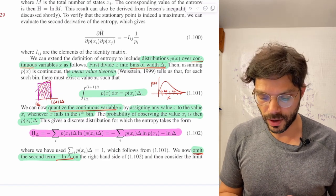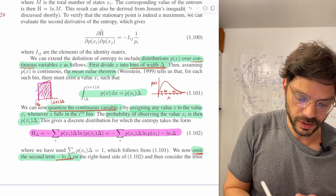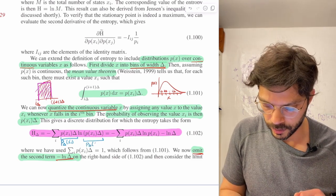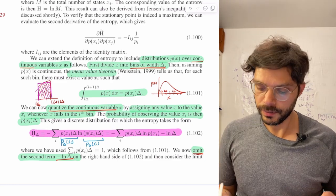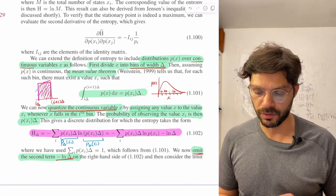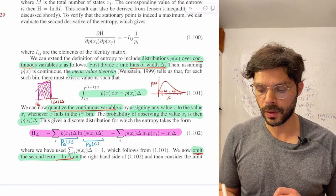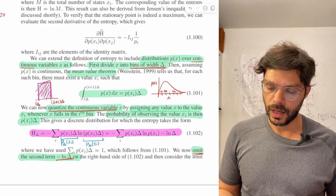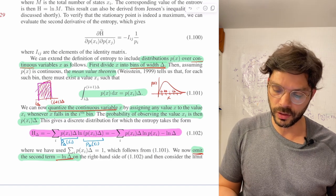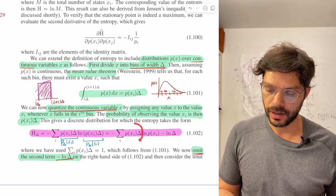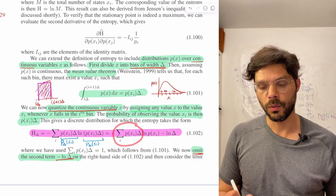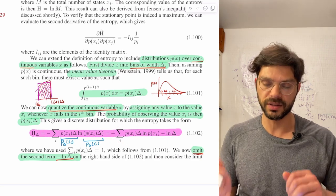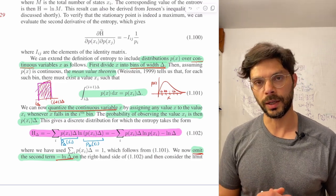Notice we've got a subscript delta. We expand ln of p_delta, and one of the terms is just ln of p of x, which multiplies the sum over i of p_delta. The other term is ln delta. When you evaluate the sum, it's equivalent to integrating p of x over the entire domain, so it just evaluates to 1, and we end up with ln delta.